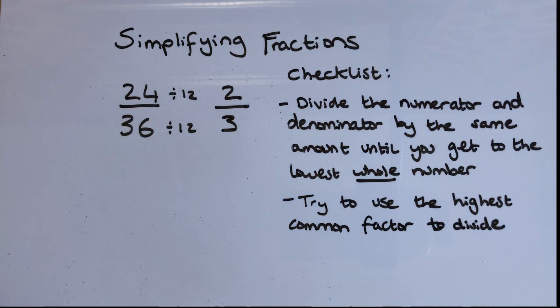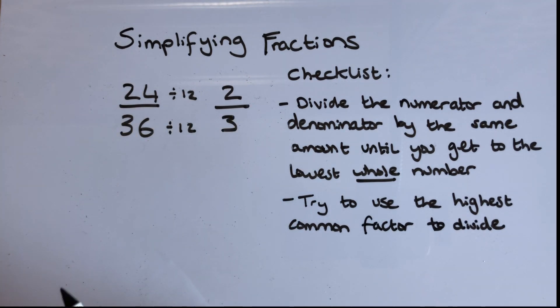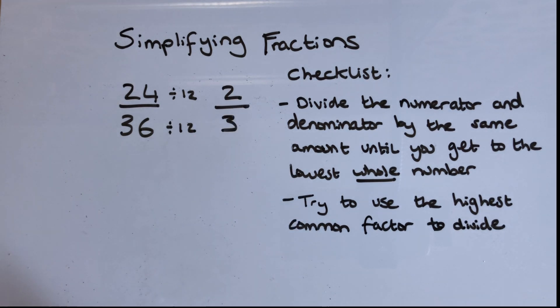So good luck simplifying your fractions. Remember, divide them down until you get to your lowest whole numbers that you possibly can. And if you can, try and use the highest common factor, but you can use a longer method if you need to, if you can't spot that highest factor straight away.